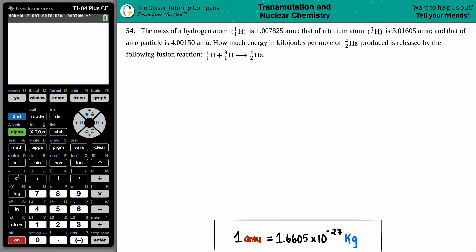Number 54. The mass of a hydrogen atom, which is H-1, is 1.007825 AMU. That of a tritium ion, which is H-3, is 3.01605 AMU, and that of an alpha particle is 4.00150 AMU. How much energy in kilojoules per mole of the helium-4 produced is released by the following fusion reaction? And then we have this reaction right here.